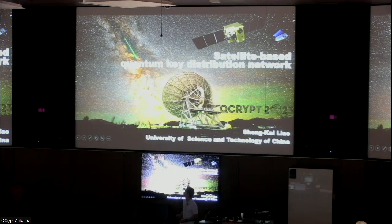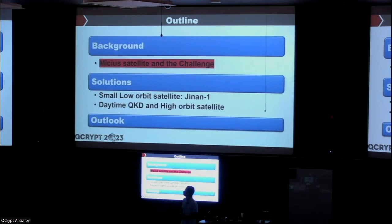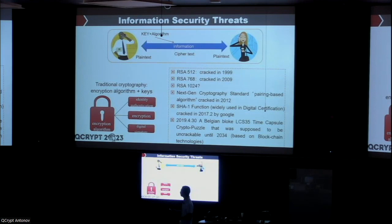Today my topic is satellite-based QKD network. I'll talk about the Micius satellite and our new micro-satellite called Jinan-1, and the design and experiments carried out by them. In the background is a photo when the Micius satellite passes over the ground station in Nanshan, China — very beautiful — and that is the laser from the Micius satellite. The talk covers: first some background, the Micius satellite and experiments, challenges, then the small satellite and daytime QKD, progress toward high-orbit satellites, and the outlook.